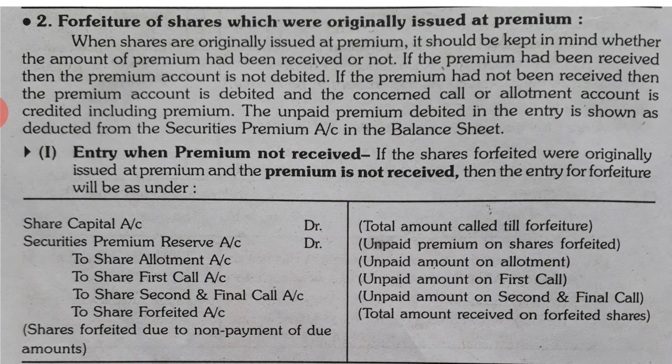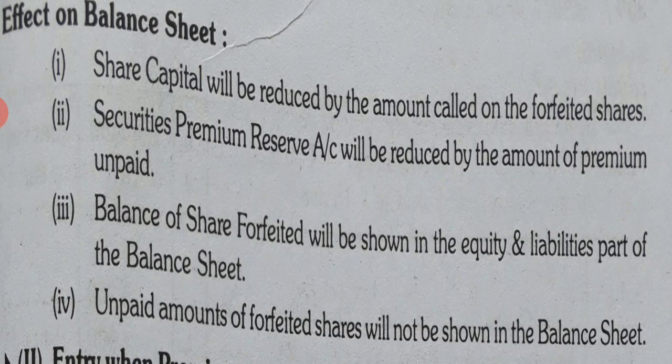Other entries are the same as in the first case. In the first video you were taught: Share Allotment account, Share First Call, Share Second and Final Call — so all these are credited for the unpaid amount on allotment, first call, and final calls. At the end, we credit the Share Forfeited account with the amount which had already been received.